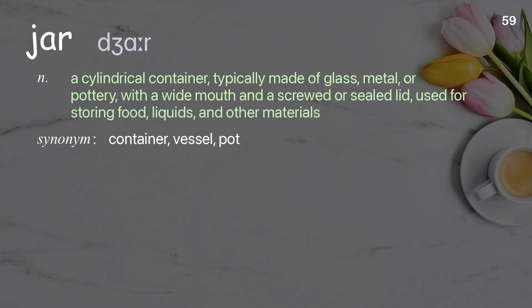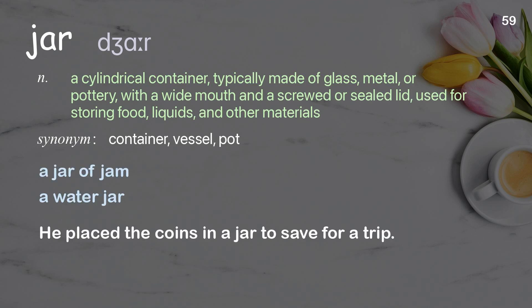Jar: A cylindrical container, typically made of glass, metal, or pottery, with a wide mouth and a screwed or sealed lid, used for storing food, liquids, and other materials. Examples: A jar of jam, A water jar. He placed the coins in a jar to save for a trip.